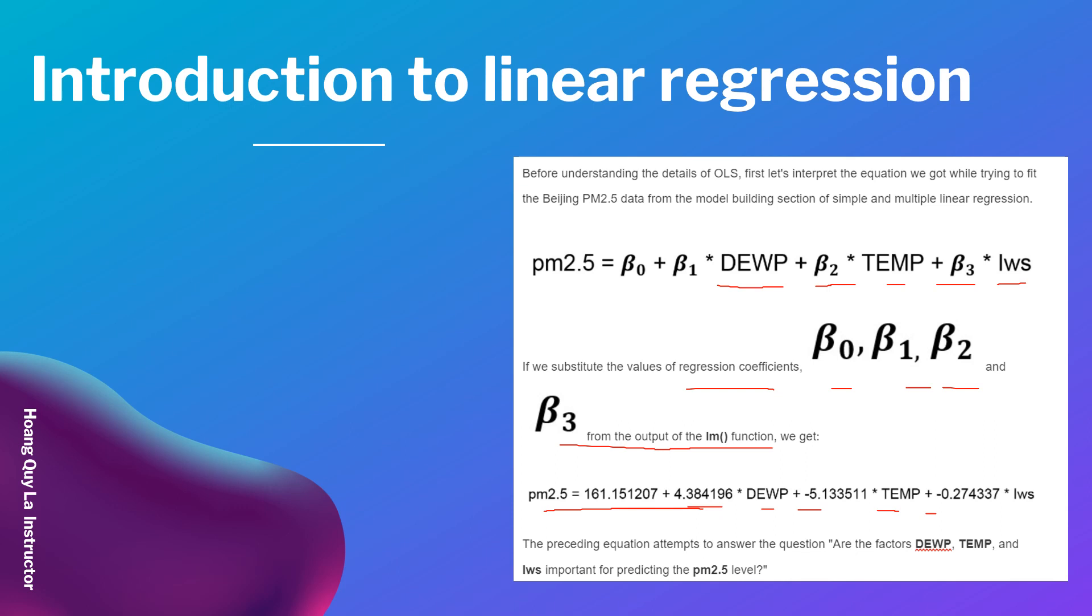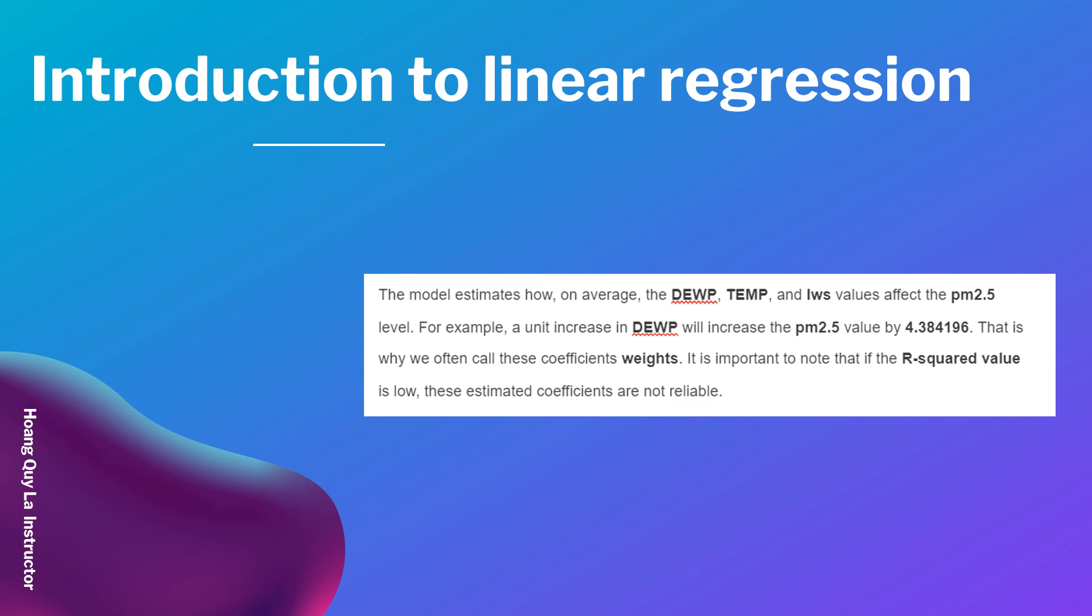Are the factors DEWP, TEMP, and Iws important for predicting the PM 2.5 level? The model estimates how, on average, the DEWP, TEMP, and Iws values affect the PM 2.5 level.